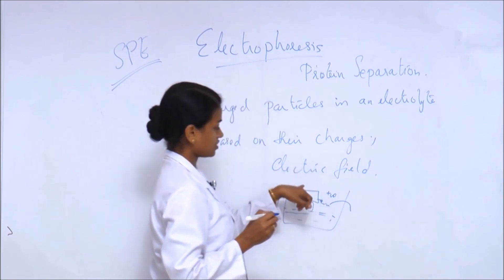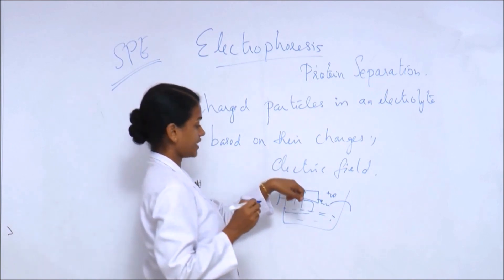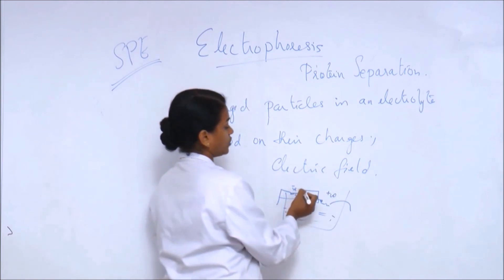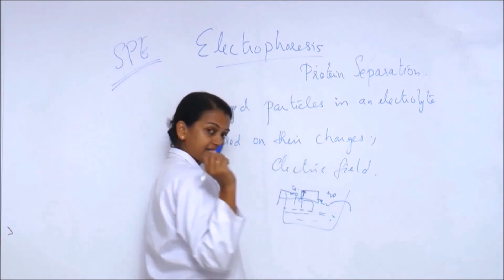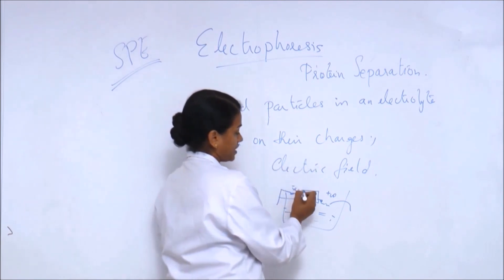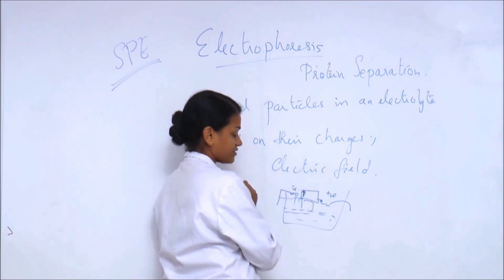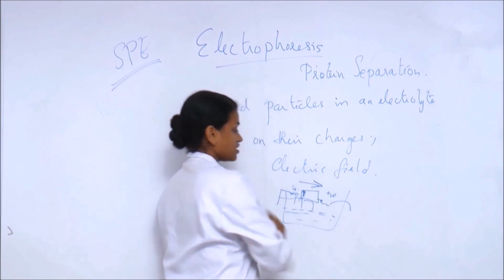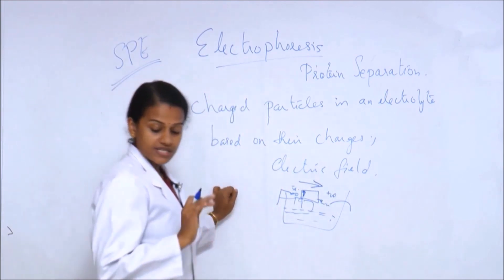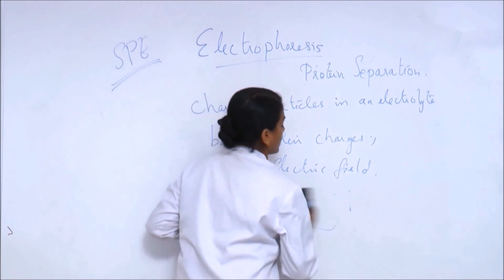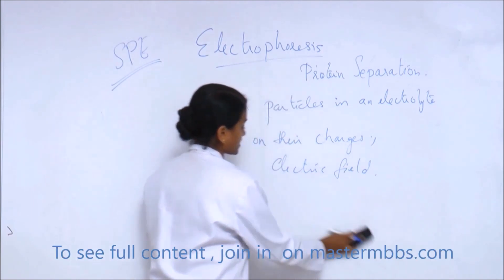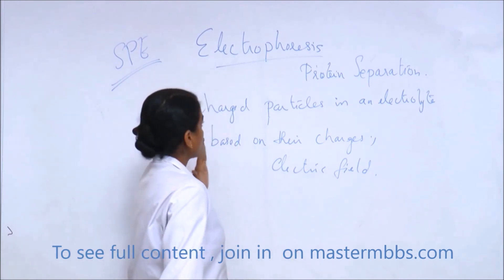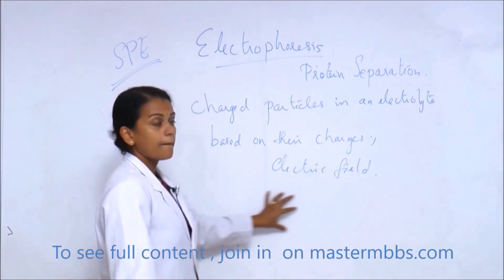Movement during electrophoresis occurs from negative to positive. You take the serum sample from the patient, apply it on the glass slide near the negative electrode, and the run occurs towards the positive electrode. Once the run is complete, you apply a staining solution, fix the sample, stain it, then de-stain it to get a pattern.